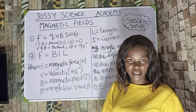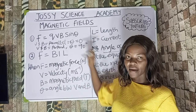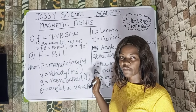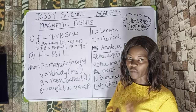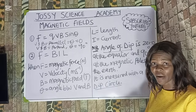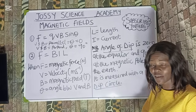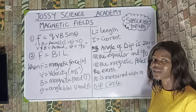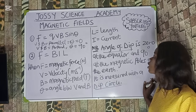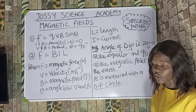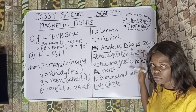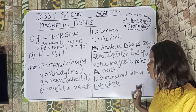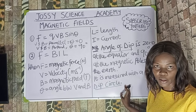The force on a conductor of length L carrying current I in a magnetic field B is F equals BIL. B is the magnetic field, I is the current, and L is the length of the conductor. If B and I are parallel, the magnetic force equals zero; if perpendicular, the force is maximum. You must also note the angle of dip: it is zero at the equator and 90 degrees at the magnetic poles of the Earth, measured using a dip circle.